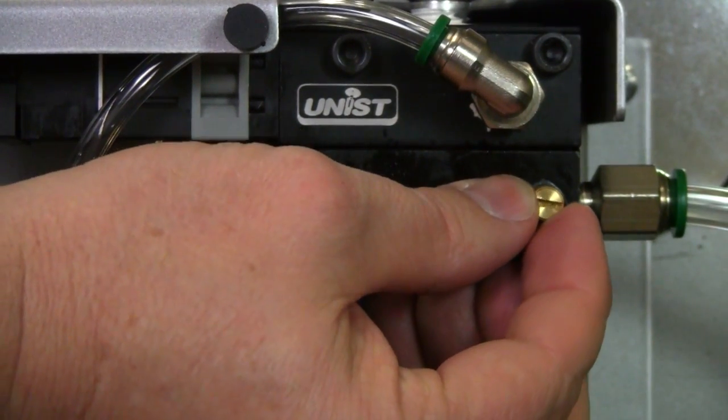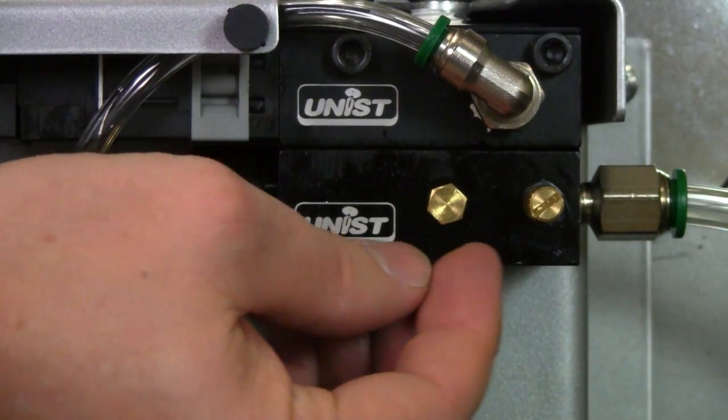Conversely, if you turn the air up too high, you're going to get an undesirable condition. Maybe you can see the system is misting a little too much. Now you only want to set the air to the point where it's delivering a nice even flow of material right to the cutting tool or the saw blade.